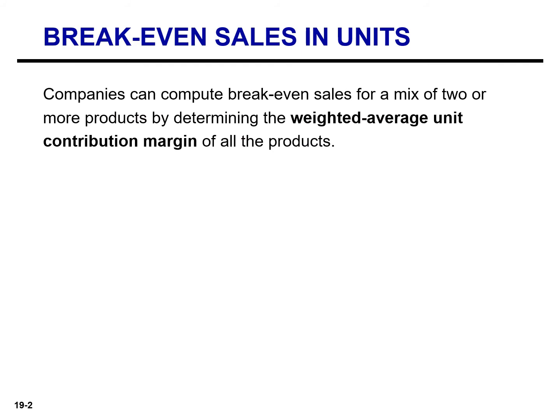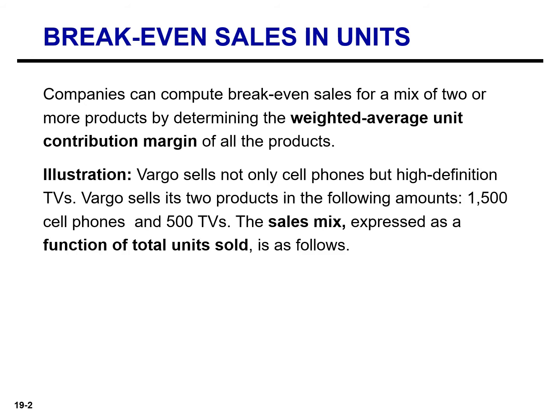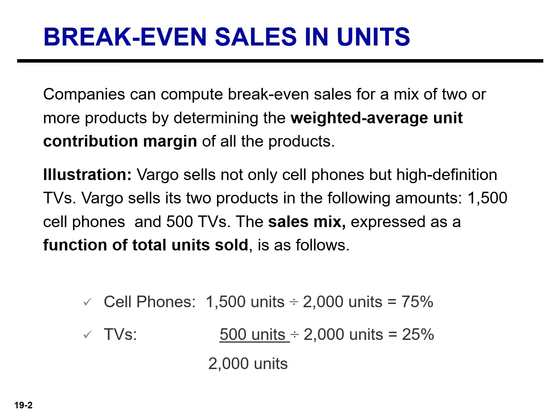Companies can compute break-even sales for a mix of two or more products by determining the weighted average unit contribution margin of all the products. To illustrate, let's assume that Vargo Video sells not only cell phones but also high-definition TVs. Vargo sells 1,500 cell phones and 500 TVs. The sales mix, expressed as a percentage of total units sold, is 75% cell phones and 25% TVs out of the 2,000 total units sold.